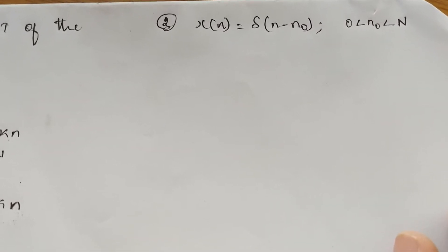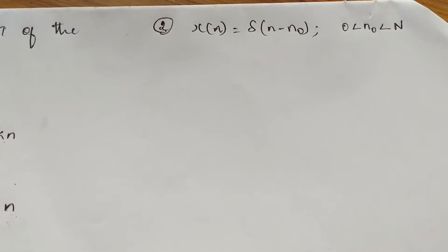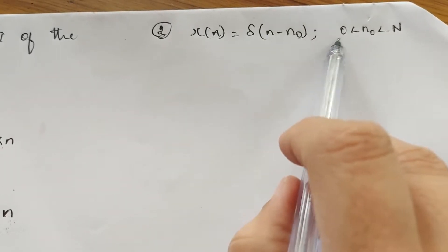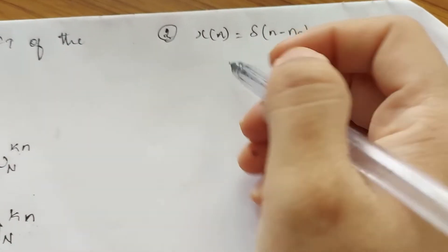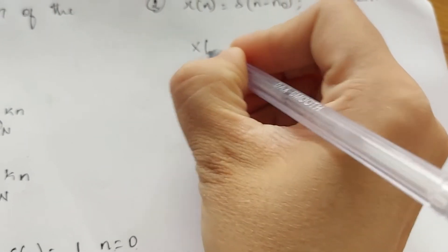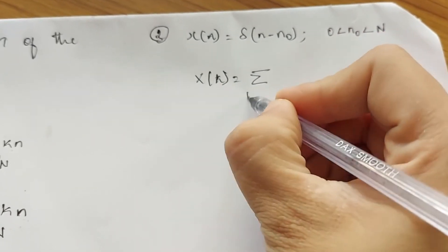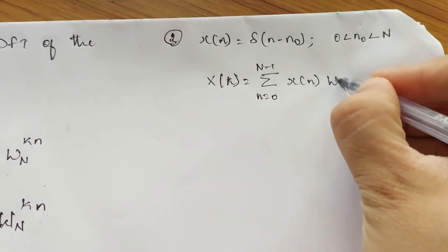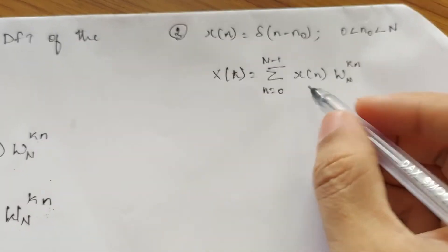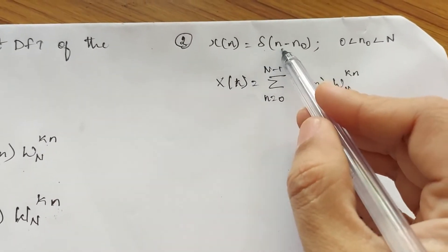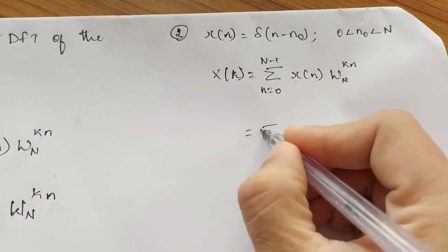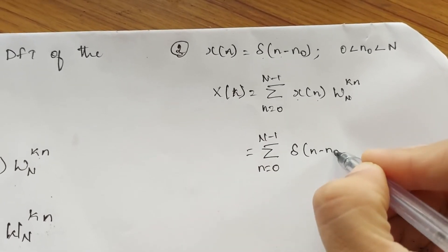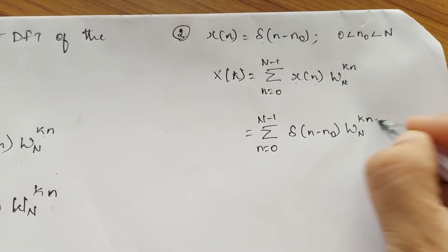Now let us see the second problem. Compute the N-point DFT of the signal x(n) = δ(n - n₀), where n₀ varies from 0 to N. We know the DFT of the sequence is given by X(k) = summation from n=0 to N-1 of x(n) · W_N^(kn). Substituting x(n) = δ(n - n₀), we get X(k) = summation from n=0 to N-1 of δ(n - n₀) · W_N^(kn).